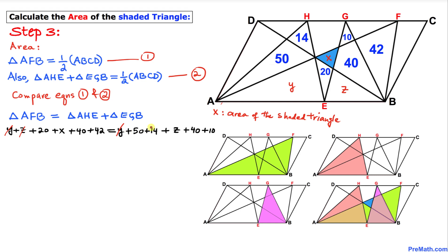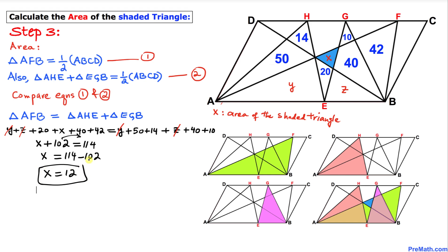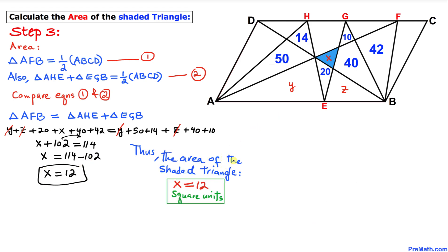Now let's solve for x. The y and z on the left-hand side cancel with the y and z on the right-hand side. Combining like terms, the left-hand side gives x + 102, and the right-hand side sums to 114. Moving 102 to the other side: x equals 114 minus 102, so x equals 12. Thus the area of the shaded triangle is 12 square units.